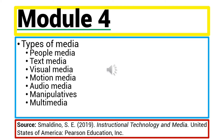In people media, we have resource speakers who are knowledgeable or experts in the field. For text media, these are the books, newspapers, and newsletters. Visual media contains icons, logos, charts, and slides in science experiments.